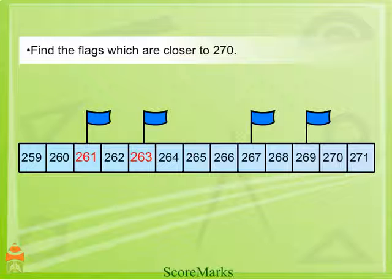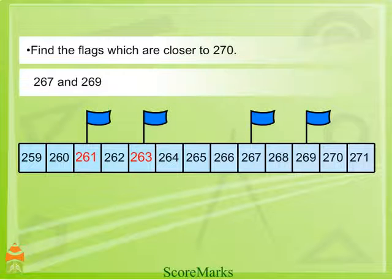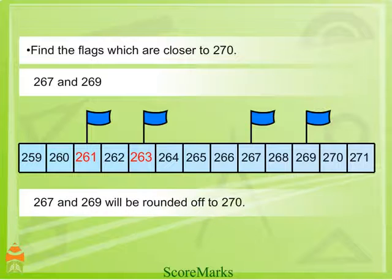Which flags are closer to 270? 267 and 269. Therefore, 267 and 269 will be rounded off to 270.